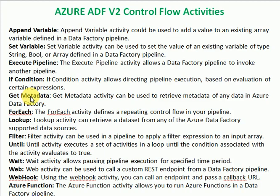Get Metadata is mainly used to retrieve metadata from objects you use in Data Factory. For example, to know if a source file has arrived — if the metadata is available, that validation returns true, and you can proceed to the next job like loading data in your copy activity. So get metadata verifies whether a source file is available.